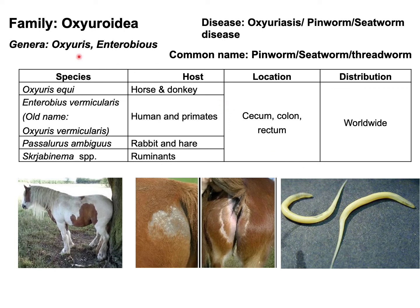In this video lecture, I'm going to talk about another important family, which is Oxyuridae. Under this family, two important genera will be discussed: the first one is Oxyurius and the second one is Enterobius. Important species under these two genera will also be covered.